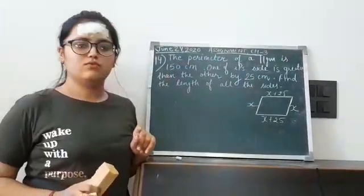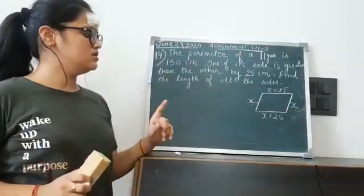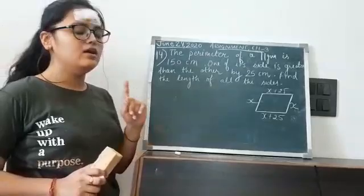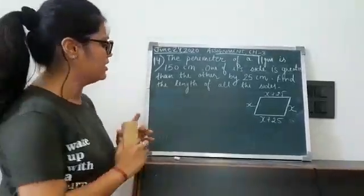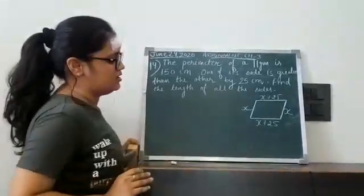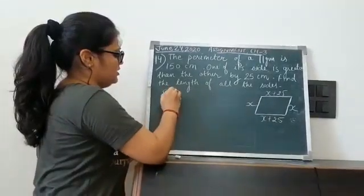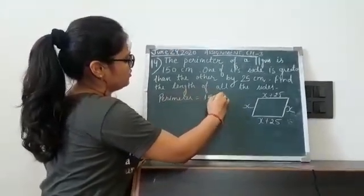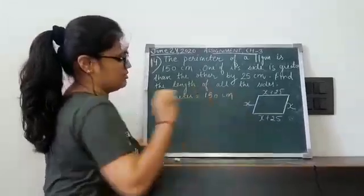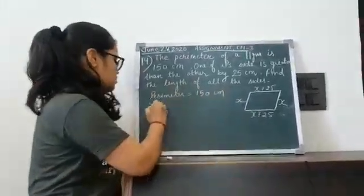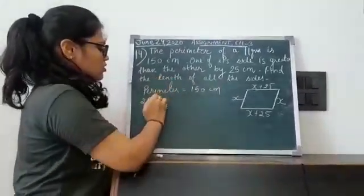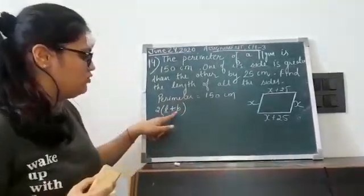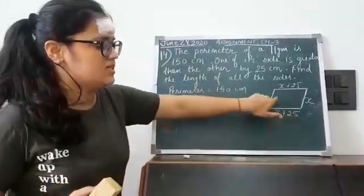There are two methods to find the perimeter of a parallelogram — sum of all sides, or you can apply the formula 2 into length plus breadth. I am going to apply 2 into L plus B. The perimeter is equal to 150 cm, that means 2 into L plus B. The reason for applying this formula is that the opposite sides are equal.